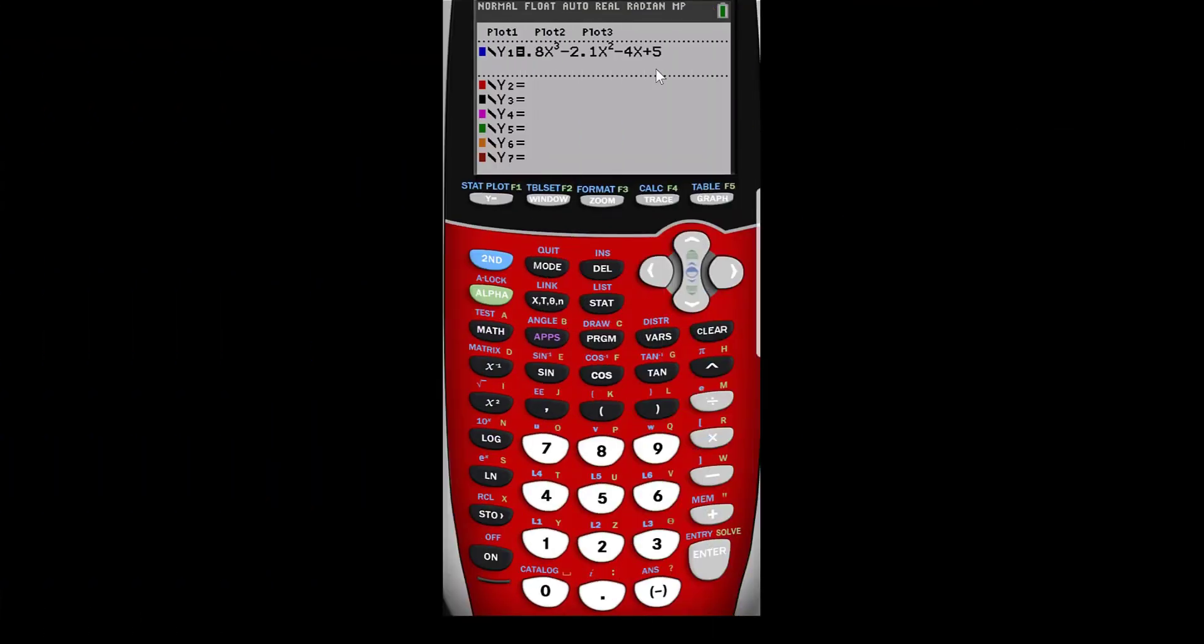And so once you have this on the calculator, you go ahead and hit graph. And so from this graph you can see that we have three zeros. So now what we want to do is find out what those are. So you push second calculate and then zero and you're going to pick a point. So let's find this zero here first.